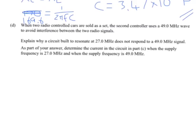Okay, D. When two radio-controlled cars are sold as a set, the second control uses 49.0 MHz to avoid interference between the two radio signals. Explain why a circuit built to resonate at 27.0 MHz does not respond to a 49.0 MHz signal. As part of your answer, determine the current in the circuit in part C, when the supply frequency is 27 MHz, and when the supply frequency is 49.0 MHz. They're telling you everything here. We're giving you lots of hints. Okay, I'm going to circle the important part. You're determining the current in the 27 MHz circuit, but when the supply frequency is 49 MHz.